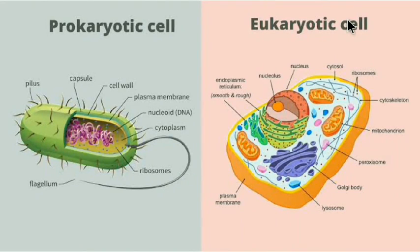Now let's see the differences between prokaryotic and eukaryotic cells. Prokaryotic cells do not possess a nucleus or membrane-bound organelles, while eukaryotic cells possess membrane-bound organelles including a nucleus. The diameter of prokaryotic cells is 0.2 to 2 micrometers, while eukaryotic cells are 10 to 100 micrometers. Prokaryotic cells have no true nucleus, no nuclear membranes, while eukaryotic cells consist of a true nucleus with a nuclear membrane.